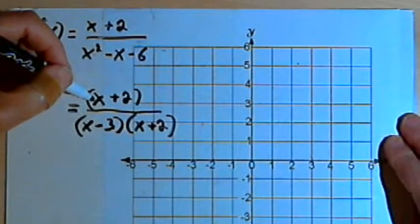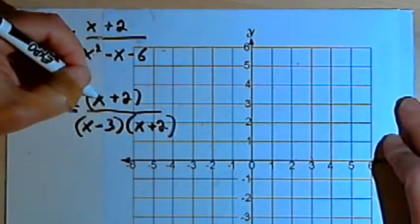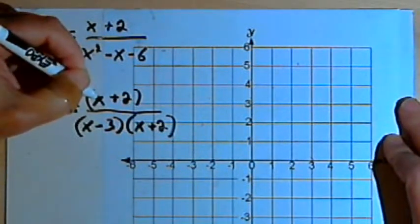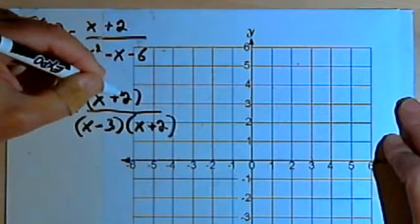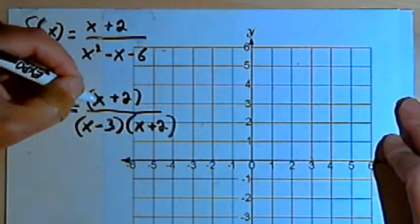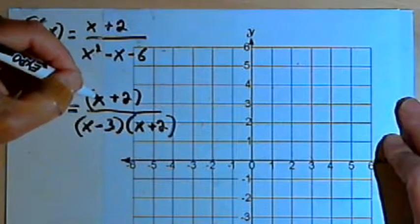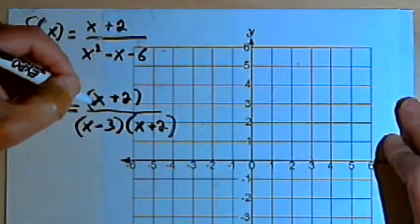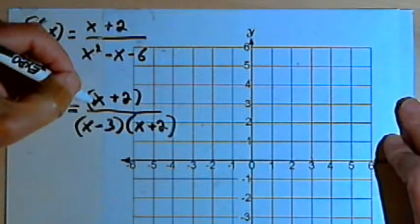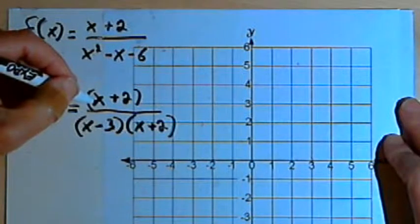The hole is going to occur at the place where the common factor, in this case the x plus 2, would equal 0. So x plus 2 equals 0 when x equals negative 2. So now we know the x-coordinate for the hole we want. That's going to be at x equals negative 2.